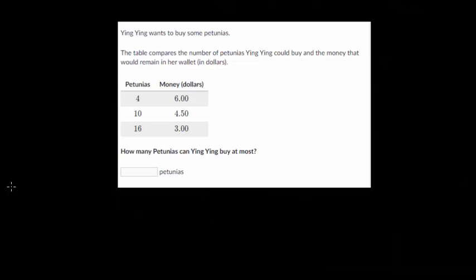So Ying Ying wants to buy some petunias. The table compares the number of petunias Ying Ying could buy and the money that would remain in her wallet in dollars. So how many petunias can Ying Ying buy at most? So essentially, we need to figure out when she runs out of money, how many petunias will she have bought? So let's again figure out what we're jumping by.